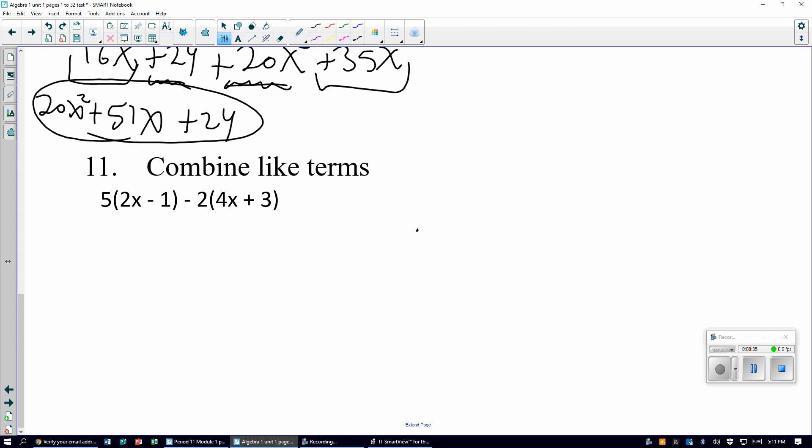Last one, combine like terms. 10x minus 5, negative 8x, negative 6. No squares, just making sure I'm doing everything right. 10x minus 8x is positive 2x, negative 5 minus 6 is negative 11. Great, that's it, see you tomorrow.